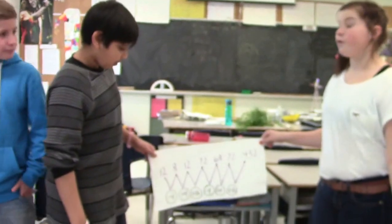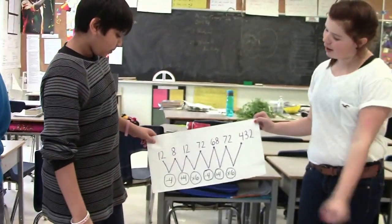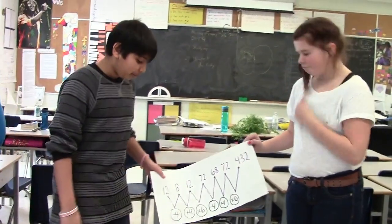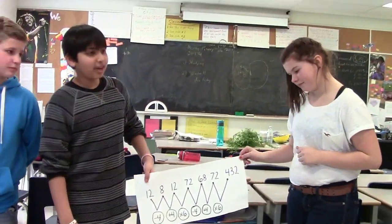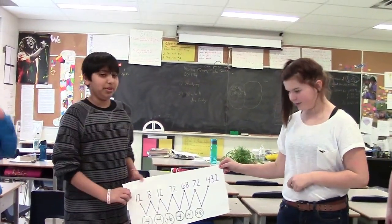Alright, group 2. Our math pattern is 12, 8, 12, 72, 68, 12, 432. We got that by subtracting 4, adding 4, multiplying by 6 — subtracting 4, adding 4, and multiplying by 6.